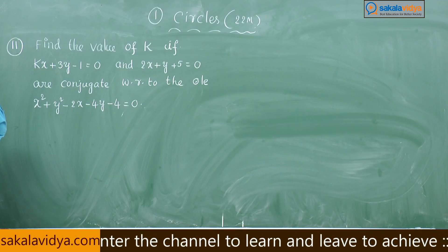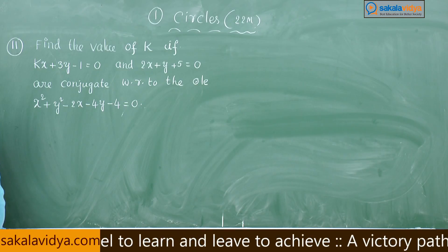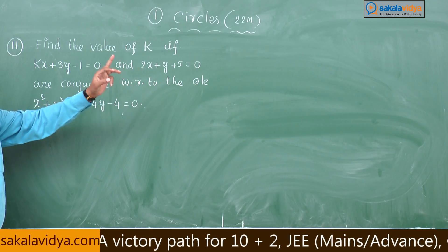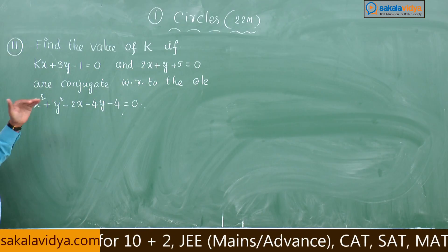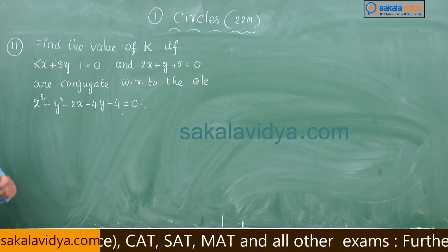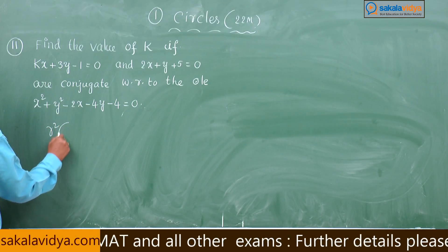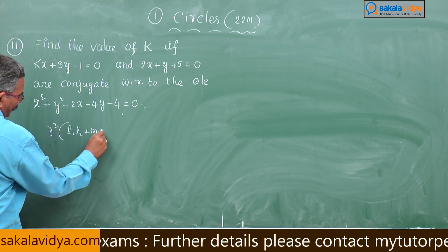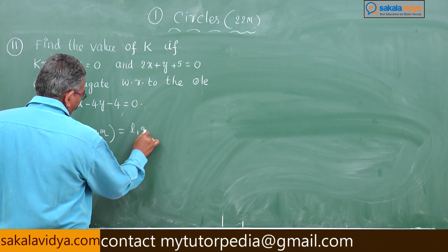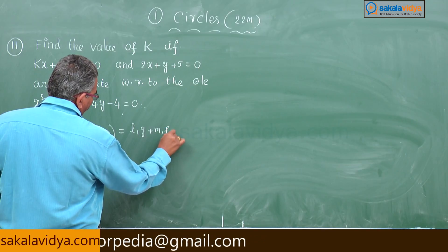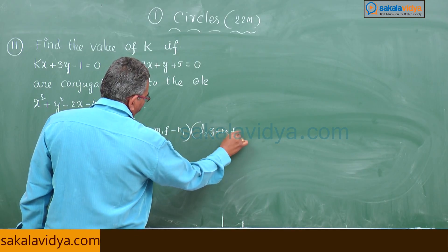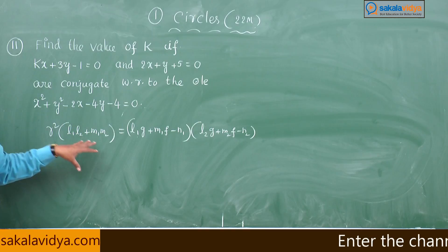This problem can be solved using the condition for conjugate lines: if l1·x + m1·y + n1 = 0 and l2·x + m2·y + n2 = 0 are conjugate lines with respect to the circle, then r²(l1·l2 + m1·m2) = (l1·g + m1·f - n1)(l2·g + m2·f - n2). We have to use this condition.